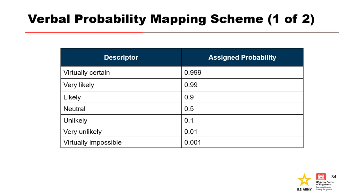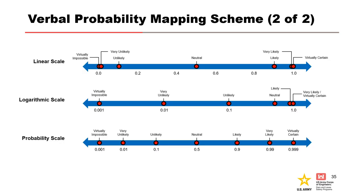Most of you are probably familiar with the verbal probability mapping scheme presented in best practices. Something that is 'likely' is assigned a probability of 0.9; 'unlikely' is 0.1; 'very unlikely' is 0.01; and 'virtually impossible' is 0.001. If we plot these on a linear scale, the lower probabilities are clustered together on one side. On a log scale, the lower end starts to spread out more, with 'very unlikely' halfway between 'virtually impossible' and 'unlikely.' On a probability scale, they are much more evenly spaced.